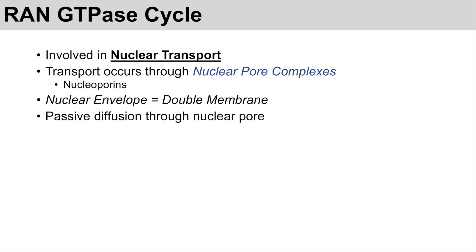Proteins can transport from the cytosol into the nucleus in a couple of different ways. One way is passive diffusion, where they can passively diffuse through nuclear pores. Usually proteins of around 60 kilodaltons or less can pass through these nuclear pores through passive diffusion. There's been some research showing that maybe slightly bigger proteins can also pass through passive diffusion.